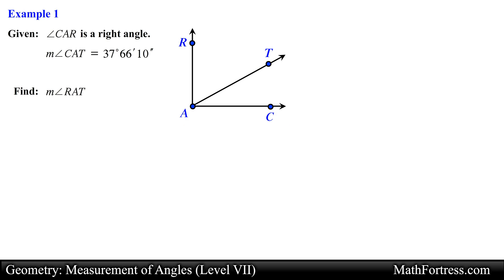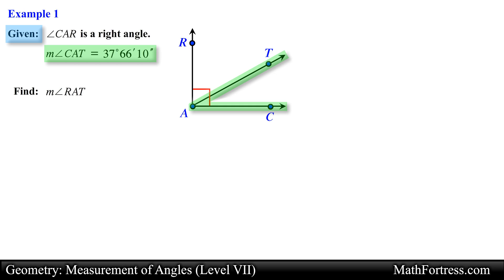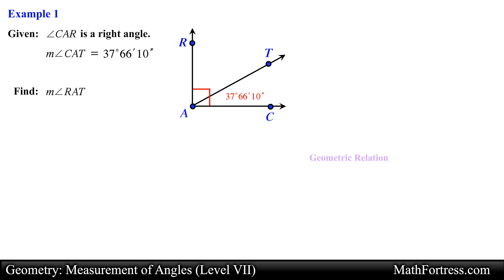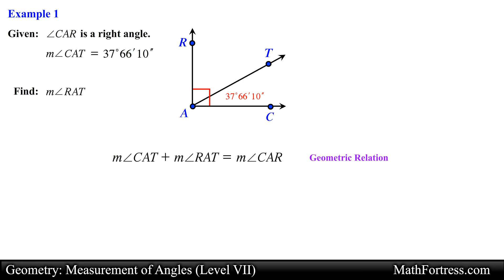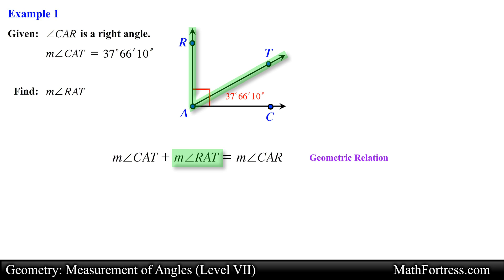Let's start the problem by labeling the given information on the diagram. We know that angle CAR is a right angle, so we draw a small square corner to denote it. We are also given the measurement of angle CAT. Since angle CAR is formed by angle CAT and angle RAT, we can set up the following geometric relation: the sum of the measurement of angle CAT and angle RAT is equal to the measurement of angle CAR.